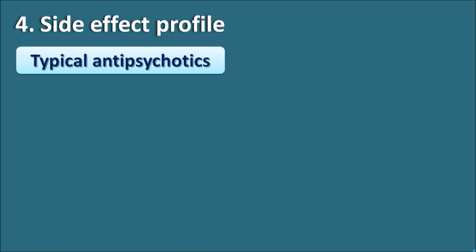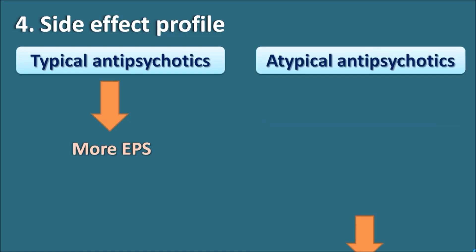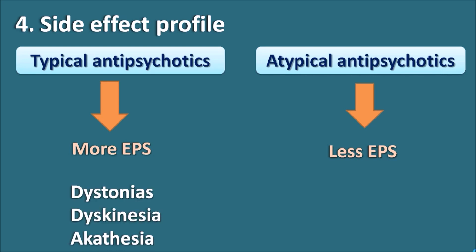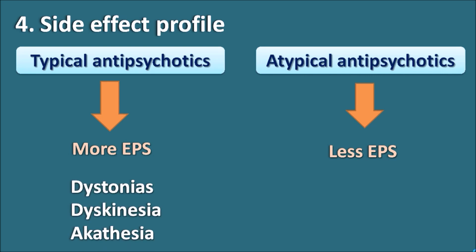The fourth difference is the side effect profile. Typical antipsychotics produce more extrapyramidal side effects, including dystonias, dyskinesia, and akathisia. Dystonias involve disturbance in muscle tone leading to muscle rigidity; dyskinesia involves disturbance in muscle movement leading to incoordination; and akathisia is the restlessness observed in patients treated with typical antipsychotics.